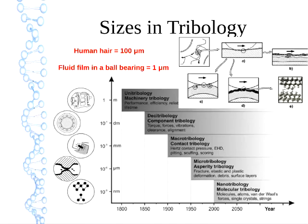As time progressed we've also studied smaller and smaller scales. Unit tribology at the meter scale — large-scale machinery — was studied around 1800. By 1850 we got to density tribology at the tenth-of-a-meter scale, looking at forces, torques, and vibrations. Around 1900, macro tribology at the millimeter scale discovered Hertz contact and EHD. By 1950, micro tribology examined asperities, elastic and plastic deformation, debris, and surface layers. Around 2000, nano tribology looks at molecules, atoms, molecular forces, boundary layers, and intermolecular forces.